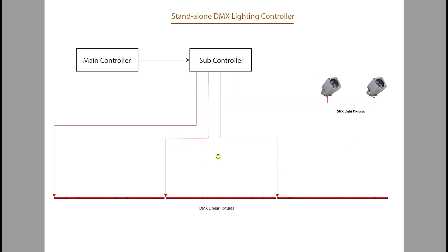From the subcontrollers, you can create different programs for floodlights and different programs for linear lights — they don't need to be the same. For example, linear lights can run dynamic programs while floodlights run color-changing or dimming programs. Most Chinese subcontrollers have eight output ports, and there are also smaller ones with two or four outputs. Each output can have a different type of light fitting and different effects.